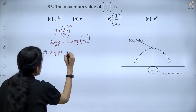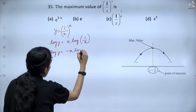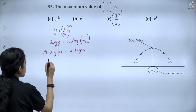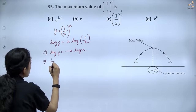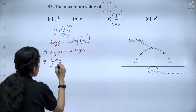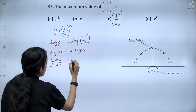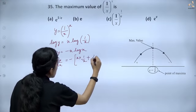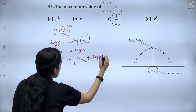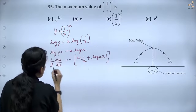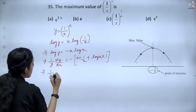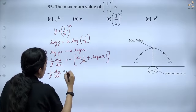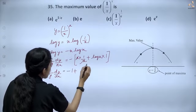So log y = -x · log x. Differentiating both sides with respect to x, we get 1/y · dy/dx = -x · (1/x) + log x · 1, which simplifies to 1/y · dy/dx = -1 - log x.